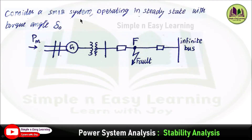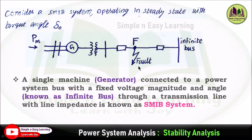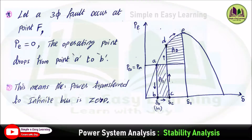Consider a Single Machine Infinite Bus (SMIB) system operating at steady state. A single generator is connected to an infinite bus bar through a transmission line having a line impedance. We assume that a fault occurs at a particular point F. In the infinite bus, the voltage magnitude and angle are fixed. When a three-phase fault occurs at point F, the electrical power will be equal to zero. At the beginning, the power starts to increase as del increases and reaches point A, at which we assume the fault occurs, so electrical power equals zero and the operating point moves from point A to point B. At this point, the angle is del_naught, meaning power transfer to the infinite bus from the generator is zero.